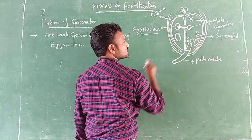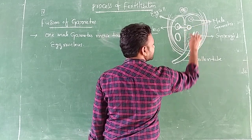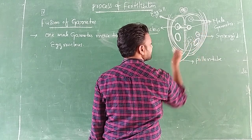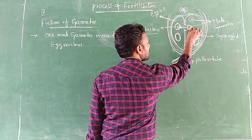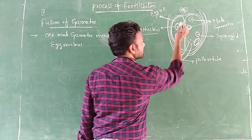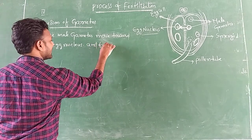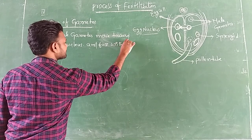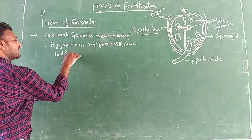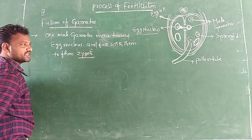You can observe: this is the male gamete present in the synergid. In this synergid there is a vacuole and a nucleus. The two male gametes — one male gamete moves towards the egg nucleus and fuses with it to form a zygote.